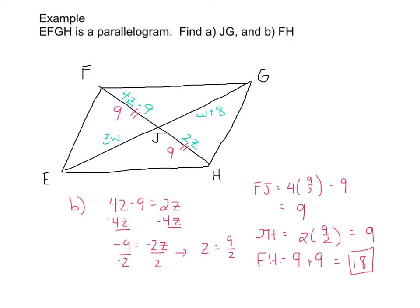Now finding FH is fairly trivial because FH is simply nine plus nine or 18. This is using purely our last theorem.